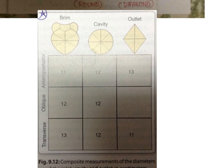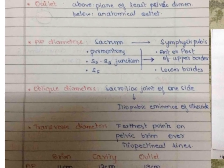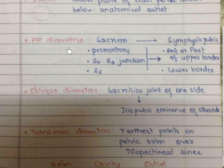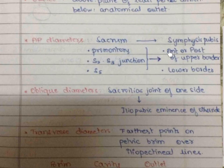AP diameter measurements are taken from the sacrum to the pubic symphysis. For the inlet, the measurement is taken from the sacral promontory; for the cavity, from the S2-S3 junction; and for the outlet, from the S5 junction. At the inlet, there are three AP diameters: the true conjugate, the obstetric conjugate, and the diagonal conjugate. Upper borders are used for inlet measurements; the lower border is used for cavity and outlet.